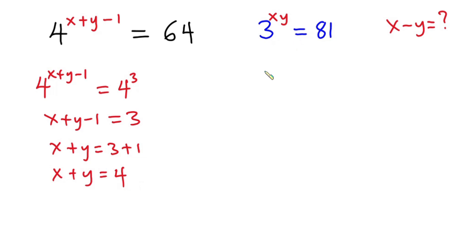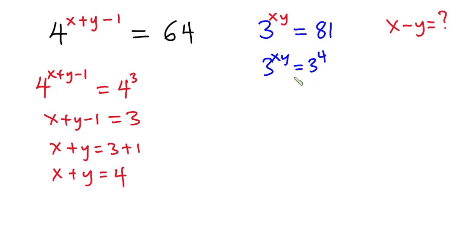3 to the power xy is equal to 81, which is also the same as 3 to the power 4. Since we have the same base, we can equate the exponents, so we have xy is equal to 4.